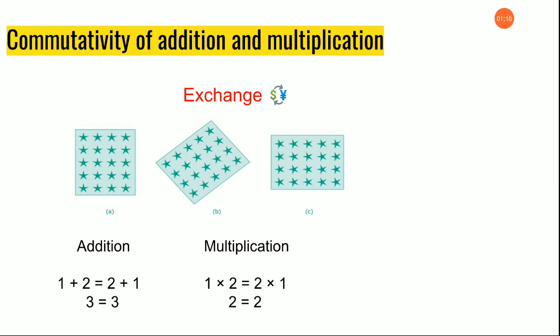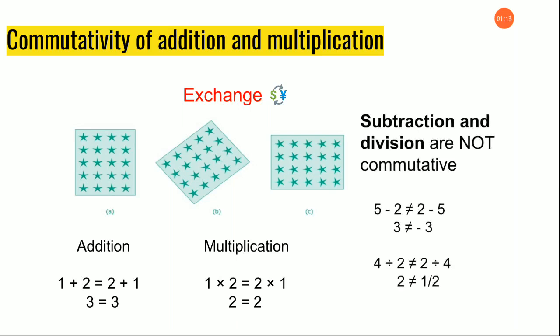Shall we check for subtraction? Five minus two is three. You exchange the places and two minus five gives you minus three. Three and minus three are not the same — they are completely different. So we cannot say that subtraction is commutative.